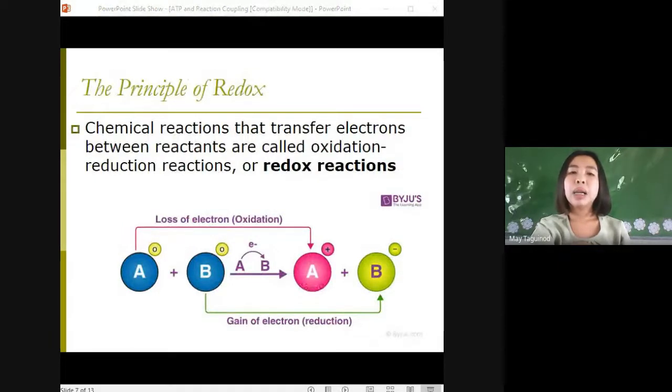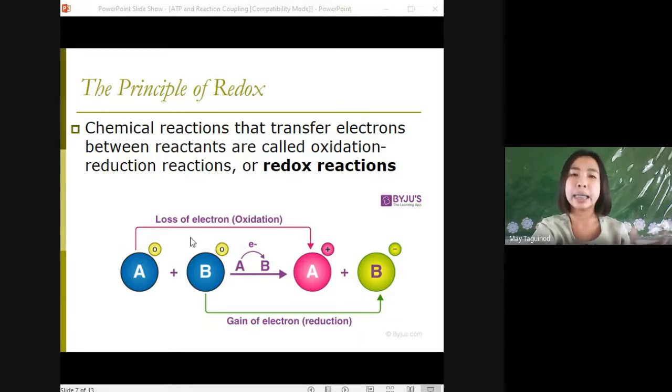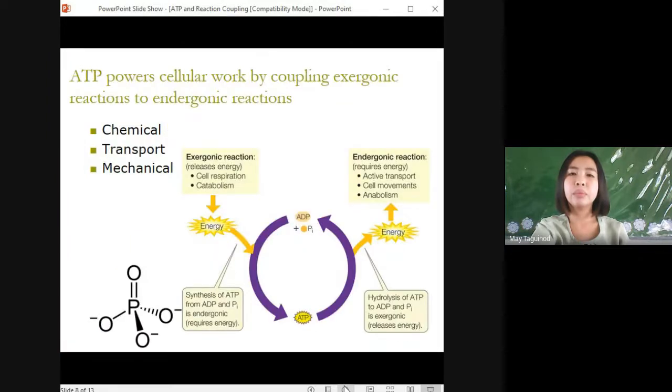Chemical reactions that transfer electrons between reactants are called oxidation reduction reactions or redox reactions. In oxidation, a substance loses electrons or is oxidized. In reduction, a substance gains electrons or is reduced. So the amount of positive charge is reduced.